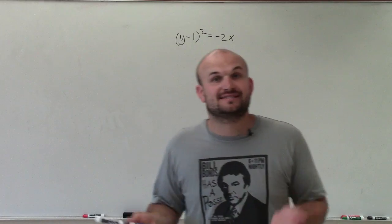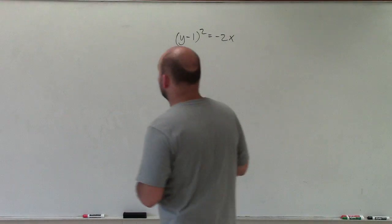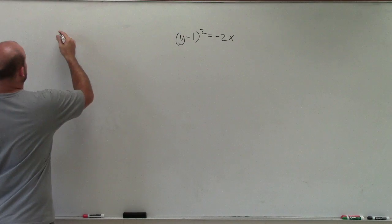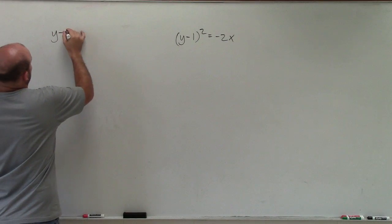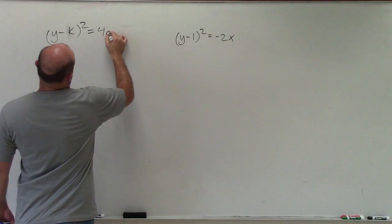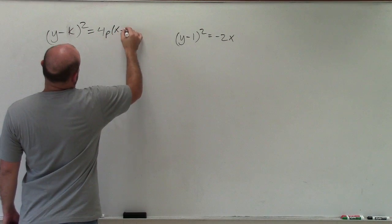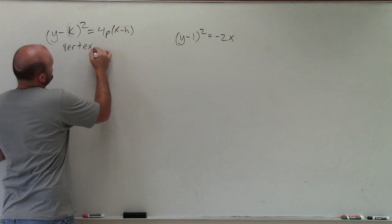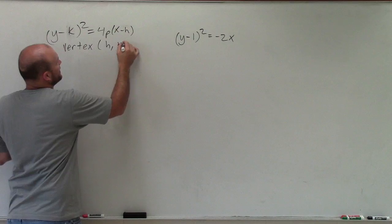To do that, I automatically see that my y is squared. Since I know my y is squared, I'm going to want to make sure I know the equation of a parabola when the y is squared, which would be y minus k, not h, squared equals 4p times x minus h. The reason why I want to write that out is because I know the vertex is at the point h comma k.